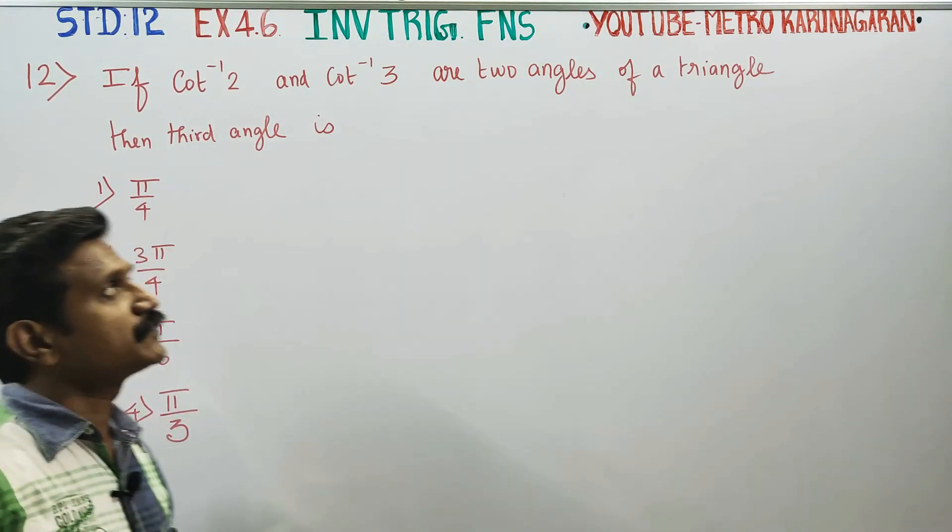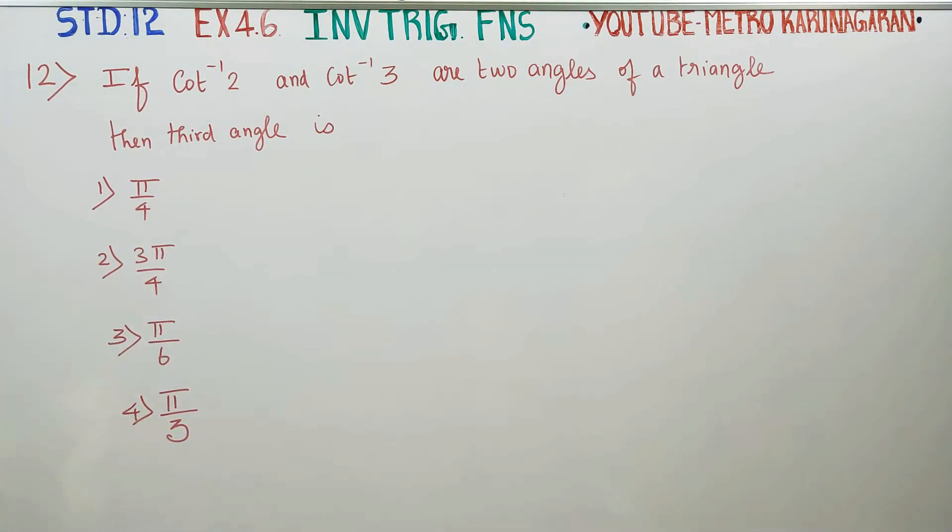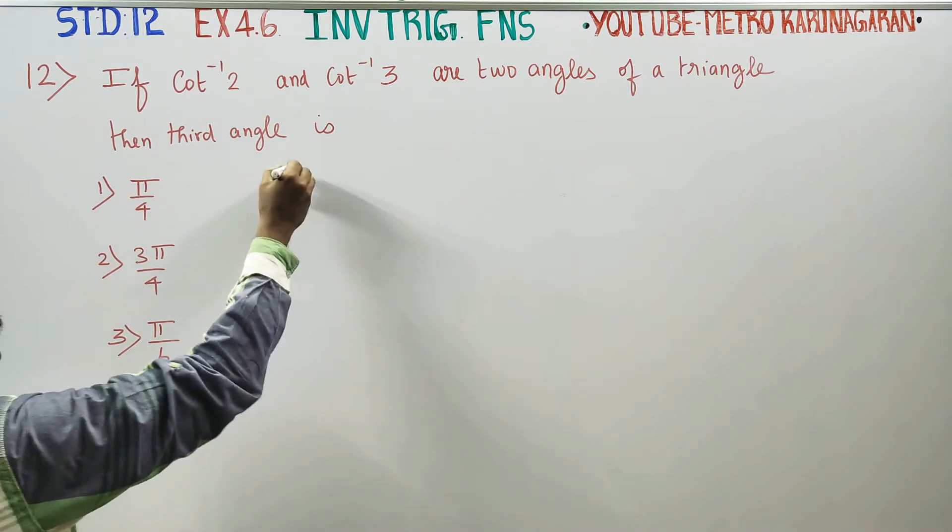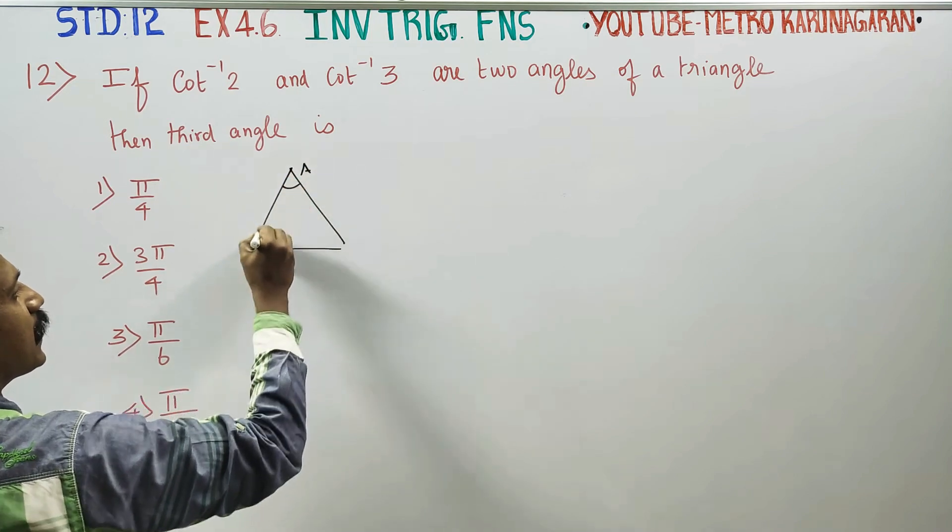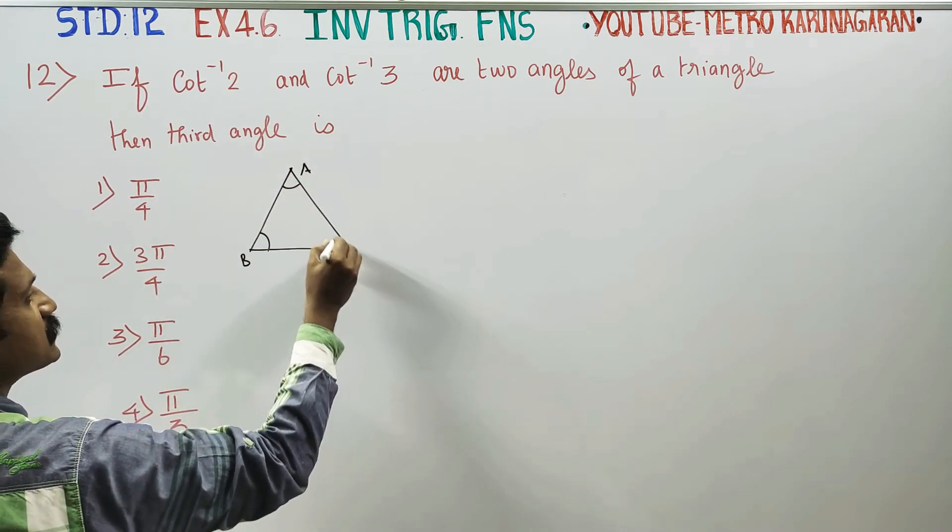If cot inverse of 2 and cot inverse of 3 are two angles of the triangle, let this be a triangle, angle A, angle B, angle C.